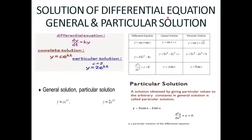Moving to solutions of differential equations, there are two types: general and particular. For the equation dy/dt = ky, the complete general solution is y = Ce^(kt), which involves an arbitrary constant C. The particular solution is obtained by fixing this constant. For example, if C = 2 under given conditions, then y = 2e^(kt) is the particular solution. Similarly, for dy/dx = sec x · tan x, if the general solution is y = sec x + C, a particular solution might be y = sec x + √2.